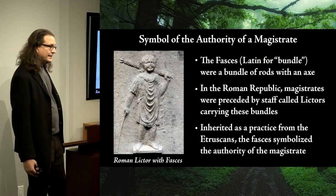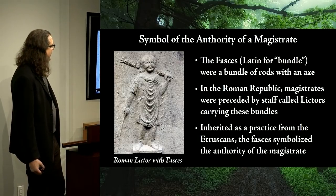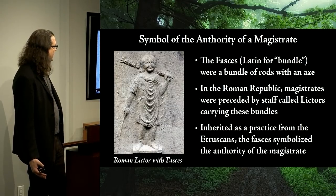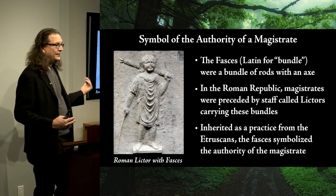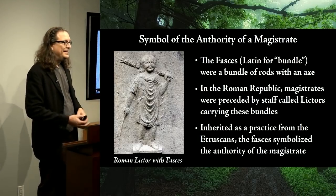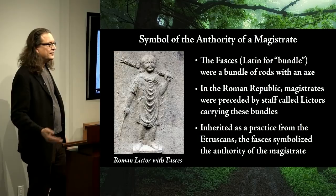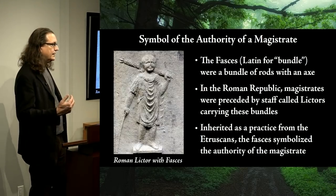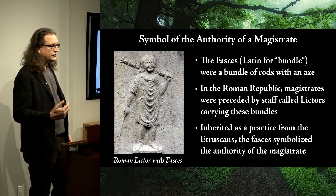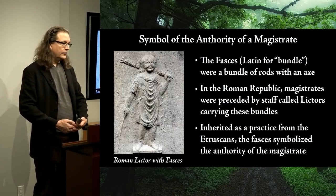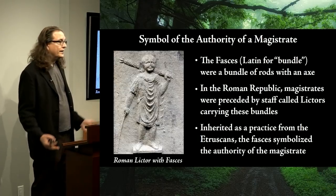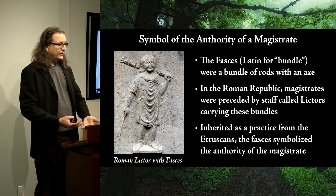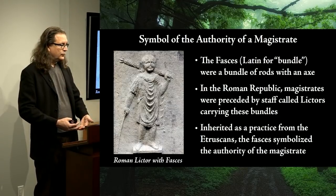The Fasces — literally the Latin word for bundle — is a bundle of rods with an axe, sometimes concealed. Roman Republic magistrates were preceded by ceremonial employees called lictors who carried these bundles. The number of lictors depended on your rank: some magistrates had just one lictor, praetors had six, and consuls had twelve lictors walking in front of them.